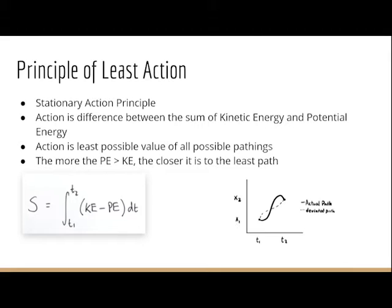So what is action? Action is a difference between the sum of kinetic energy and potential energy. The principle of least action says that for any stationary points, like one and two, the pathing may change a lot, but the laws of physics will always follow the most effective one.